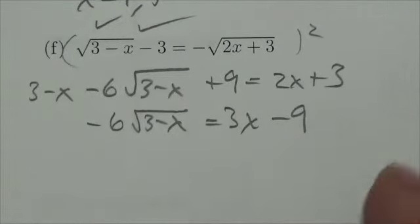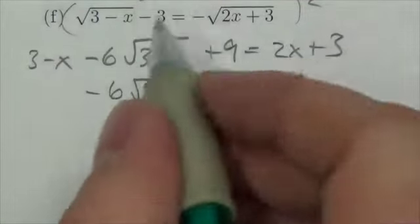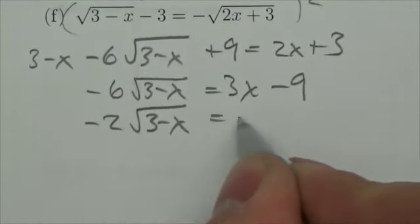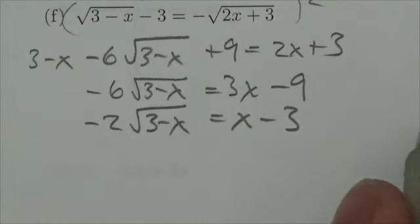I'm just going to simplify this. There's a common factor of 3 to all of that. So negative 2 root 3 minus x is going to equal x minus 3. That's just a little bit nicer to look at.